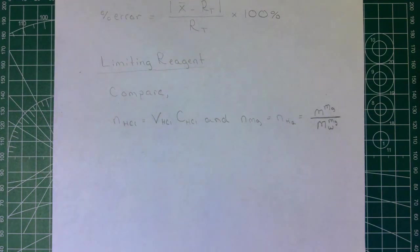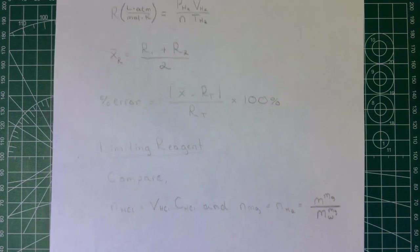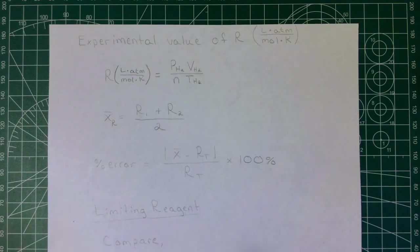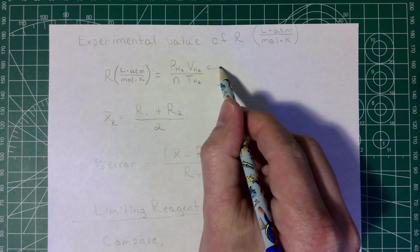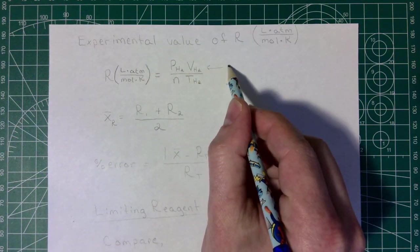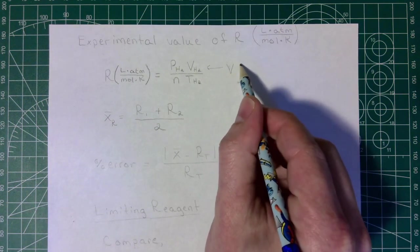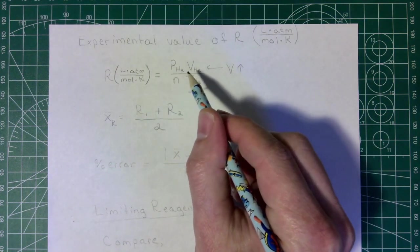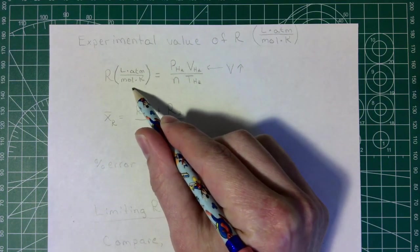The last question asks about trapping a bubble inside of our apparatus. And to think about that, what you would want to think about is the volume here. So if we made this a larger number and this goes up, then our numerator will be larger, and that's going to lead to a larger R value.